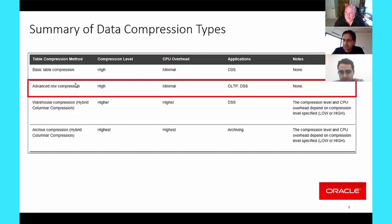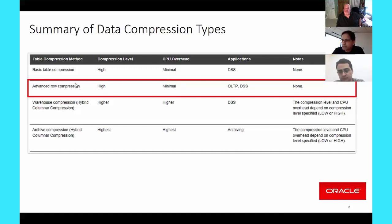There's another more recent feature called advanced data optimization, where we can push the compression to a background thread. The user places a policy on the table, partition, or tablespace, and depending on how frequently the block is accessed, they can set whatever business rules they want in order to compress the block with custom logic. We compress the block when that custom logic is satisfied. When such a policy is placed, compression happens in a background thread, so the foreground thread can continue inserting rows and we never compress in the foreground.